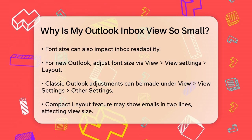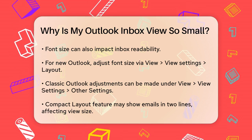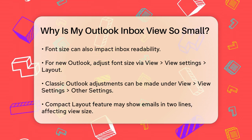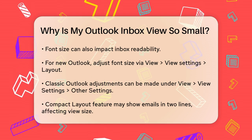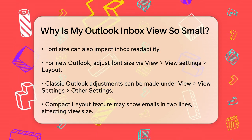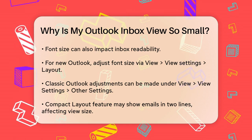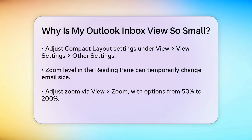The layout of your Inbox can also be affected by the Compact Layout feature. This feature shows each email item in two lines, which can be helpful on smaller screens, but might make the view seem smaller on wider screens. To adjust this, go to the View tab, select View Settings, then click Other Settings. Here you can adjust the Compact Layout settings to change the threshold width at which the view switches from single line to two line mode.